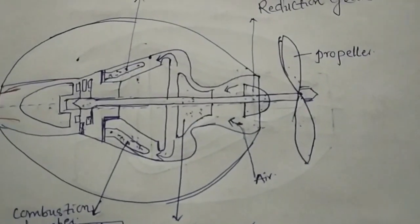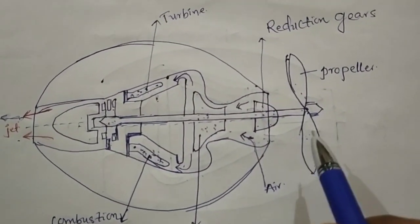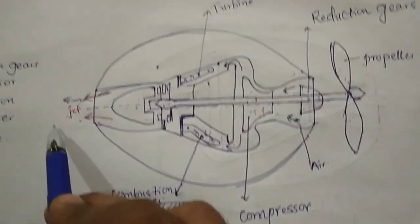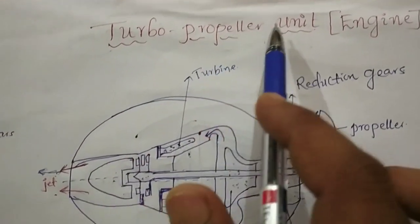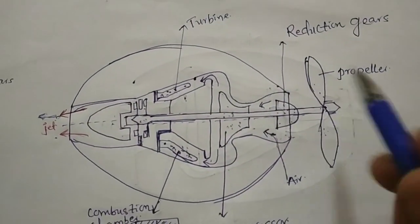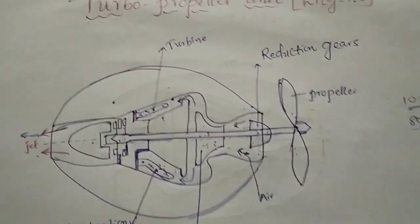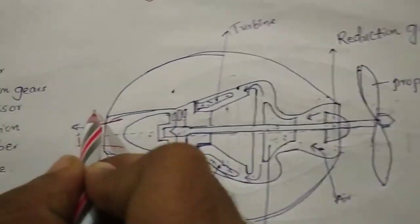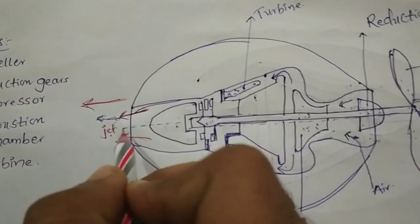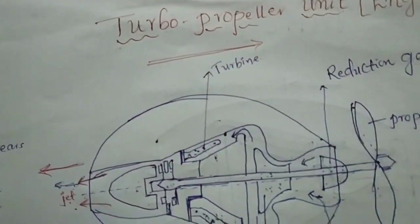The propeller and the jet of gases together create thrust, also called propulsive force. Because of this propulsive force, the body moves in the forward direction while the jet of gases goes backward. The propeller is the extra part used compared to the open cycle gas turbine. This is the working principle of the turbo propeller unit — the reaction of the jet gases moves the aircraft in the forward direction.